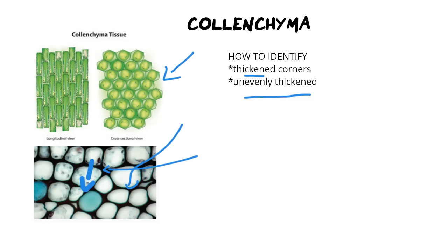Xylem cell walls are thickened with lignin because of the water pressure — water pushes strongly against the wall of the xylem and you need to keep it stable. Lastly, they have pits for lateral water movement. If you look at the diagram you can actually see some pits — these little openings — and they're labeled. Those pits allow for lateral water movement so you can move from one xylem vessel to the next. The overall function of xylem is to transport water and minerals in one direction only: from the roots to the shoots.